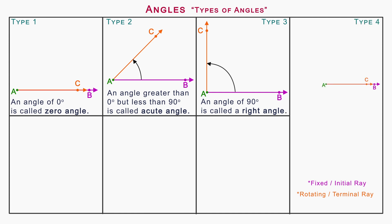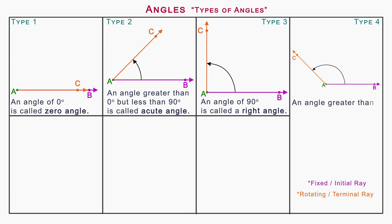Type 4: Obtuse angle. On rotating the terminal ray in anti-clockwise direction as shown on the screen, the angle formed is called an obtuse angle. An angle greater than 90 degrees but less than 180 degrees is called an obtuse angle.